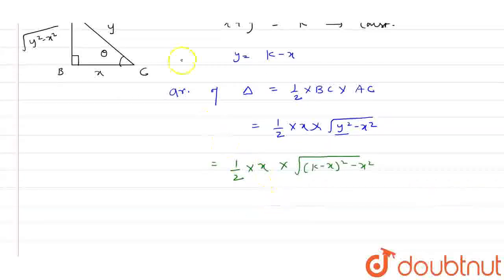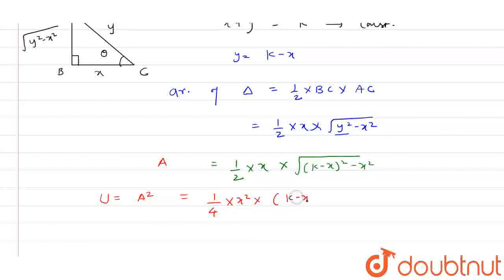Now if we take another variable, U equals A squared. So its value will be 1/4 X squared times K minus X squared minus X squared.